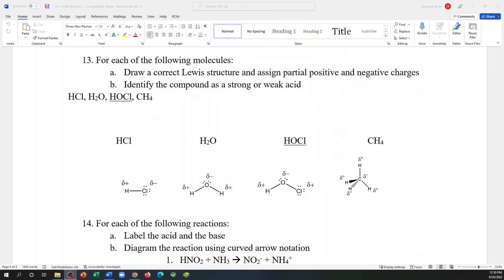I'm going to go over a few of the homework questions that I assigned in Chapter 1 just to talk about the answers and allow you to check your answers. This question number 13 asks you to draw a correct Lewis structure and assign partial positive and negative charges.